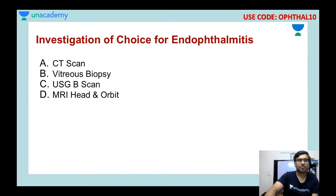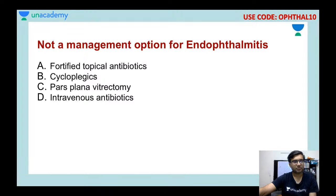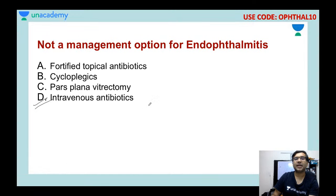Third question: what is not a management option for endophthalmitis? Options are topical antibiotics, cycloplegics, pars plana vitrectomy, or intravenous antibiotics. The answer is intravenous antibiotics. Remember: intravenous, systemic, or oral antibiotics have no role either in prophylaxis or management of endophthalmitis. We use intravitreal antibiotics.